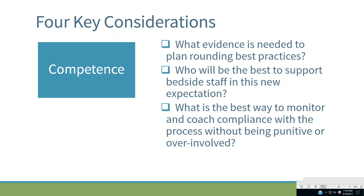Let's talk about competence first. How do we know we're really going to be good at this when we get it done? Within the competence arena, we need to look at three main points. The first is: what evidence is needed to plan rounding best practices? You want to make sure you have a way to measure that you're doing the right things in a systematic, standardized, and consistent way. Think about what your staff availability is going to be before you set your expectations for outcomes.